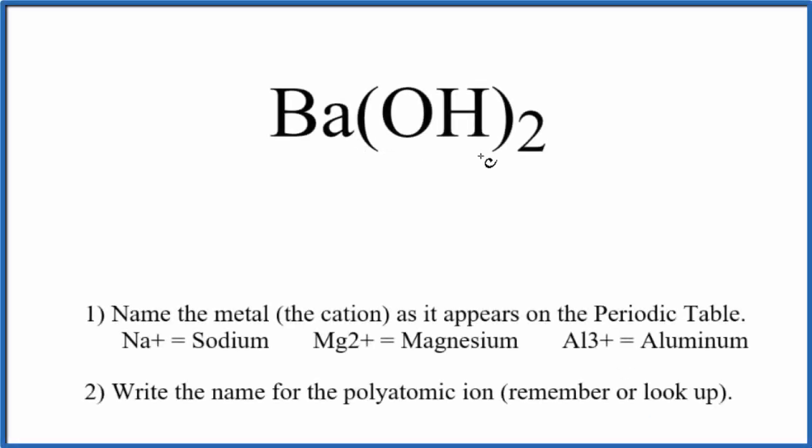To write the name for Ba(OH)₂, the first thing we need to recognize is this OH here. This is the hydroxide group.